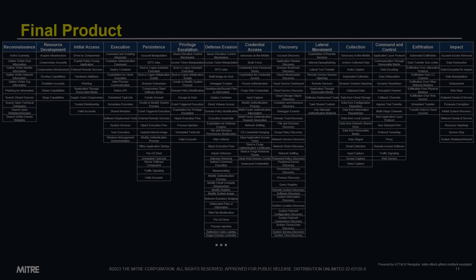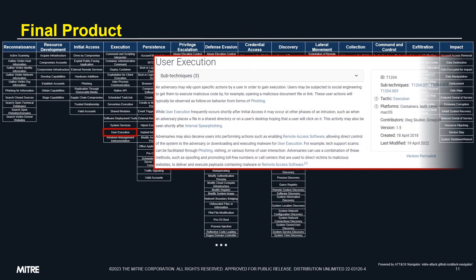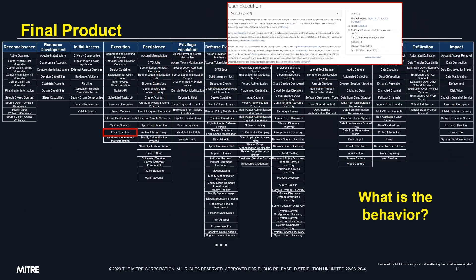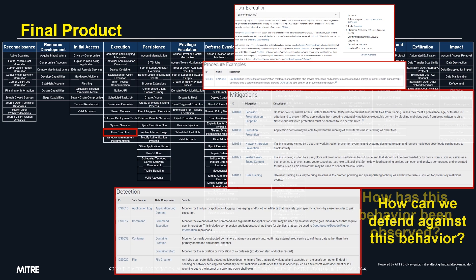So we're back at the matrix view of ATT&CK, but hopefully now you have a better understanding and appreciation for everything that goes into techniques, including the name and description, procedure examples, and finally, defensive countermeasures in the form of detections and mitigations.